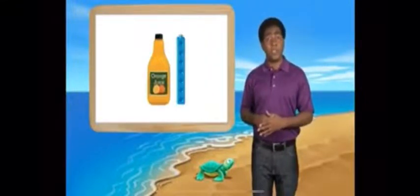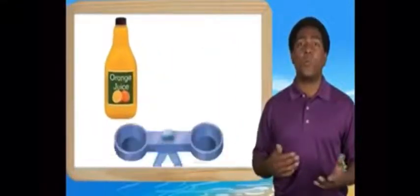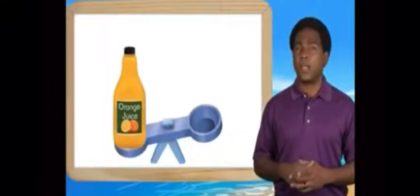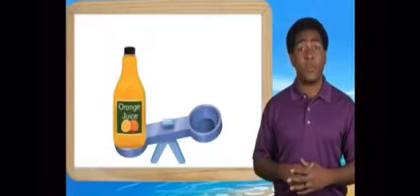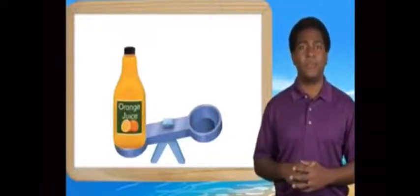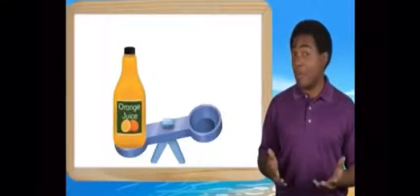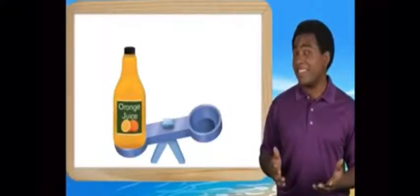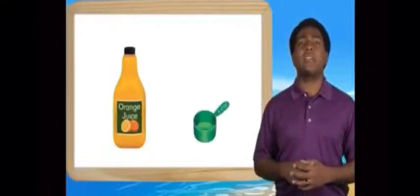Now look at this bottle of juice. We can describe its color and shape. We can use cube trains to describe its size, and we can weigh it on a scale. Color, shape, size, and weight are all attributes we can use to describe this bottle of juice. But there's one more measurable attribute — do you know what it is?